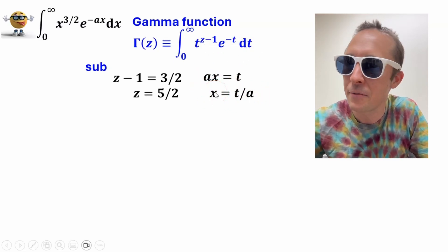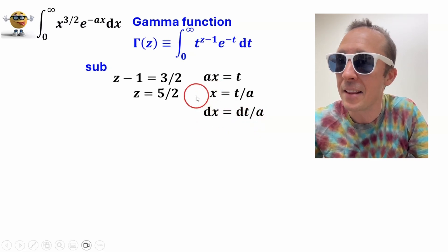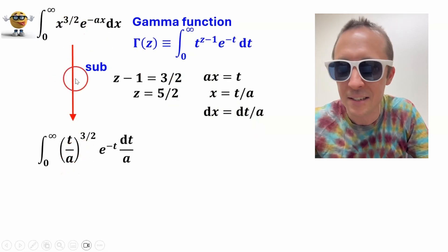so if we take this x equals t over a, take the derivative, rearrange, this is like first-year calc stuff, dx equals dt over a, and at this point, my friends, we can substitute this stuff into our integral to get this,